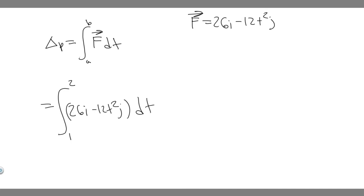If we take the integral, let's find the antiderivative first and then plug in. It's going to be 26ti, because the antiderivative of 26 is 26t. And if we take the antiderivative of minus 12t squared, it's going to become t cubed because we add one and then divide by that. So 4t cubed j, and we're evaluating it from one to two.